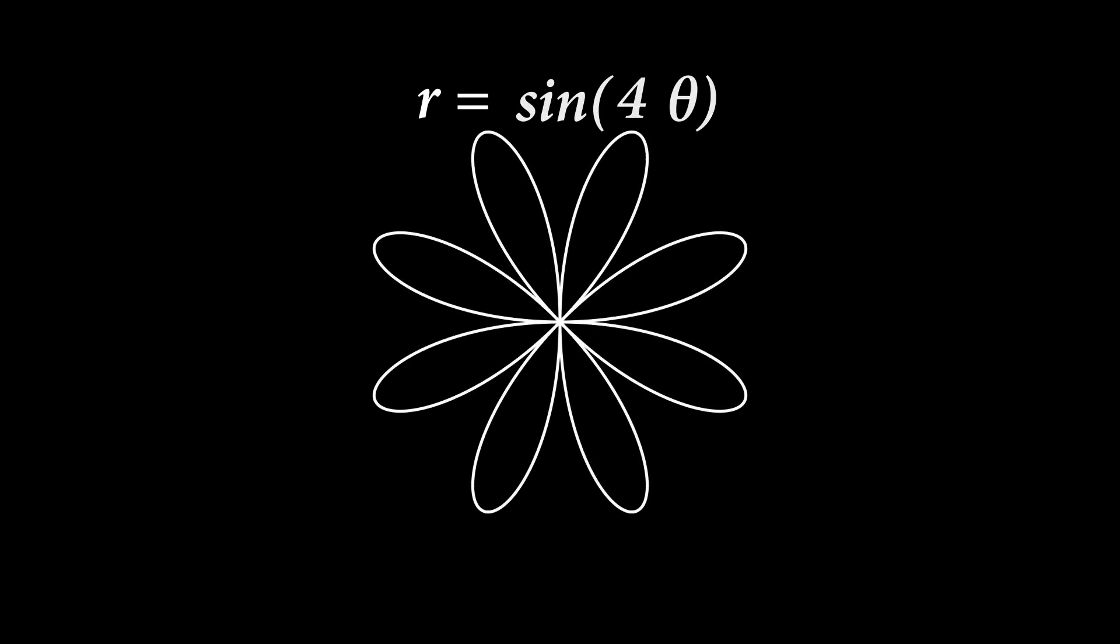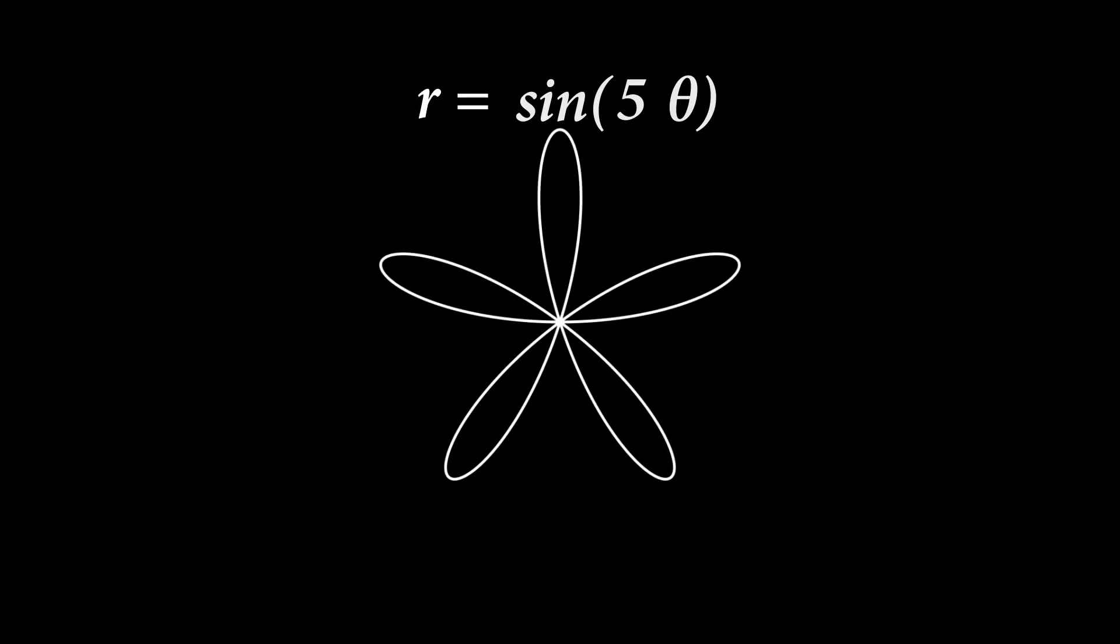Quadruple it, we get a shocking 8 petals. Quintuple it, we get 5 petals. So what happens when you add a constant?